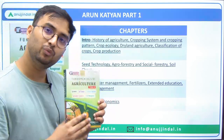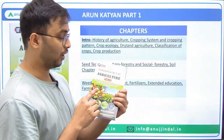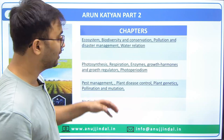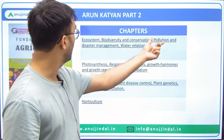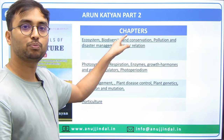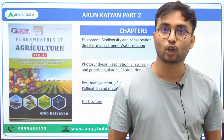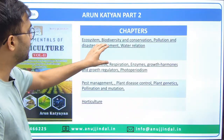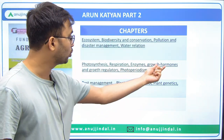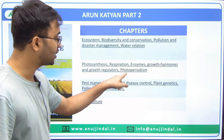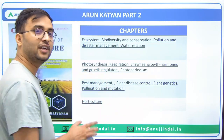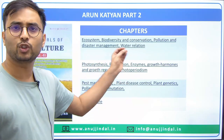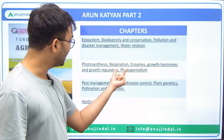Now moving to Arun Kattyan volume two. It starts with ecosystem, diversity, conservation, pollution, disaster management, and water relations. Clubbing these chapters together, they relate to environment and ecology — a main topic in the ARD syllabus — so read this section in and out. Chapters on photosynthesis, respiration, enzymes, growth hormones, growth regulators, and photo-periodism require only selective reading, since occasional questions do come from these areas in Phase 1.